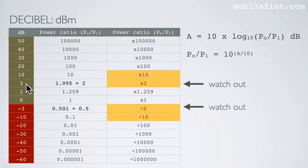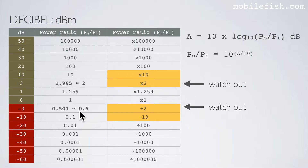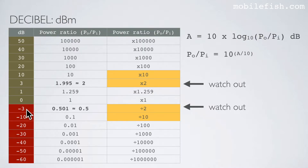3 dB is not exactly a power ratio of 2 — it is 1.995, but we round it to 2. The same applies to minus 3 dB: it is not exactly 0.5, it is 0.501, rounded to 0.5. So the power ratios belonging to 3 dB and minus 3 dB are both rounded values.